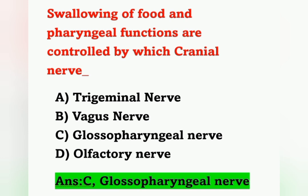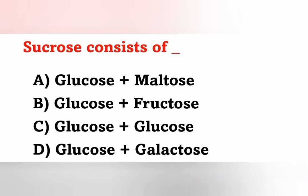The glossopharyngeal nerve is the ninth cranial nerve. It is a mixed nerve, meaning it has both sensory and motor functions. Its function is to control swallowing of food and gag reflex. Here, swallowing of food and pharyngeal functions are controlled by the glossopharyngeal nerve, option C.